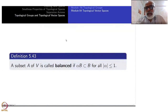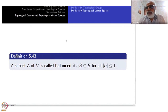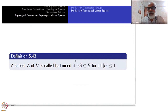A subset A of V is called balanced — this is a new concept you may not have encountered in standard study of vector spaces. It is called balanced if α·B ⊆ B for all α with |α| ≤ 1. The condition |α| ≤ 1 becomes crucial: when you take complex numbers it has a different geometric meaning than for real numbers.